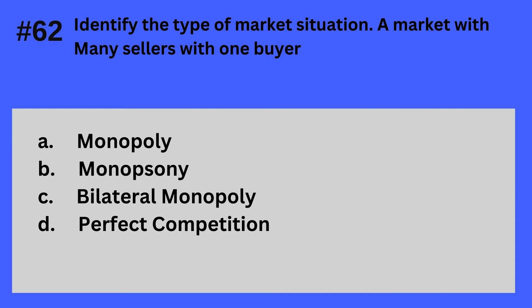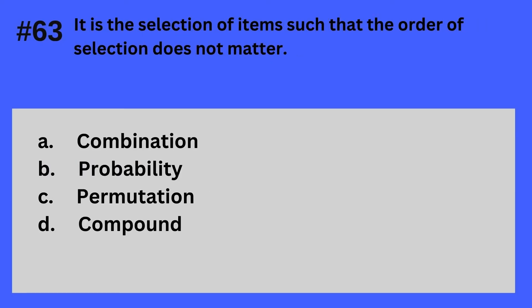Question 62. Identify the type of market situation: a market with many sellers with one buyer. A. Monopoly, B. Monopsony, C. Bilateral monopoly, D. Perfect competition. The answer is B — Monopsony.